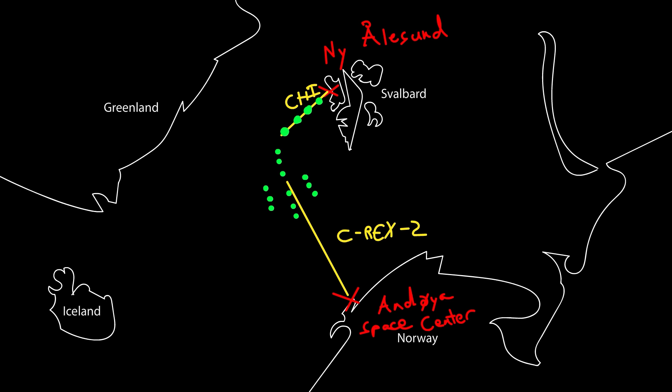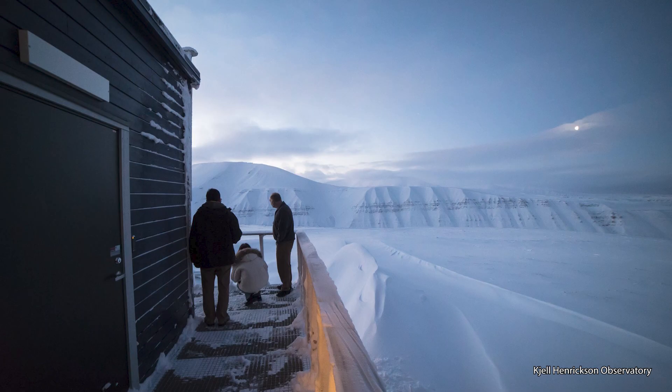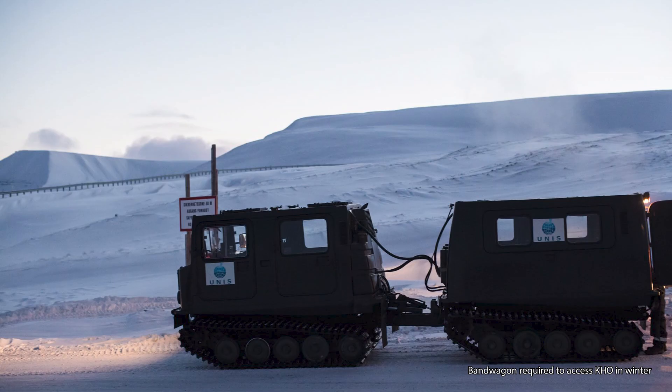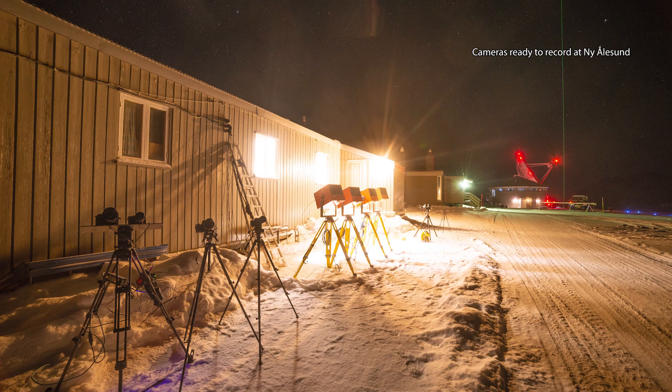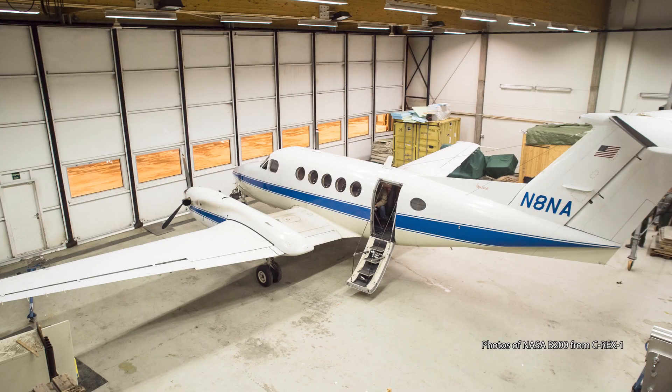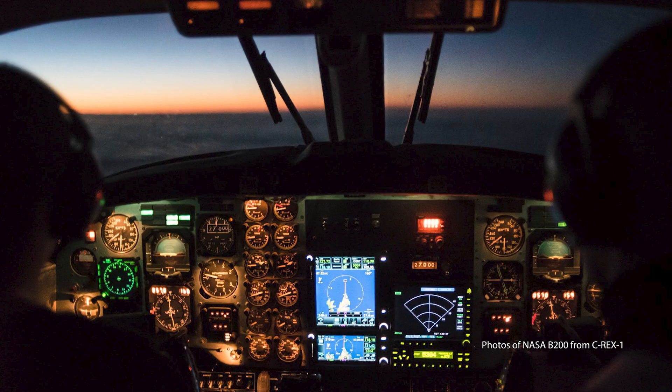Ground observers will use cameras to track the tracer clouds from Kjell Henriksen Observatory at Longyearbyen and from the Rabin Lab at Nyalesund. And an observer aboard a NASA Air B-200 aircraft flying over the Greenland Sea will also track the tracer clouds.